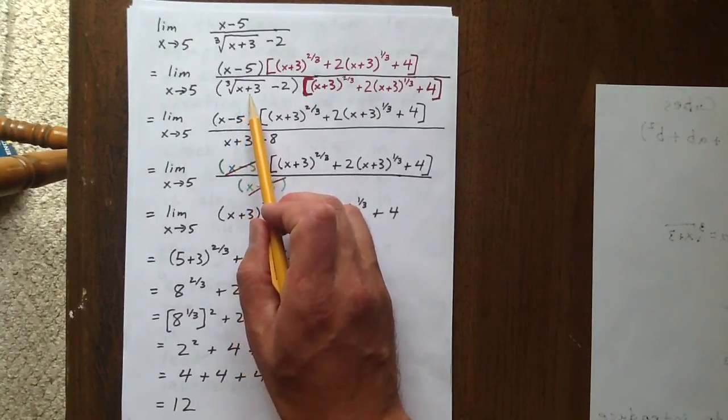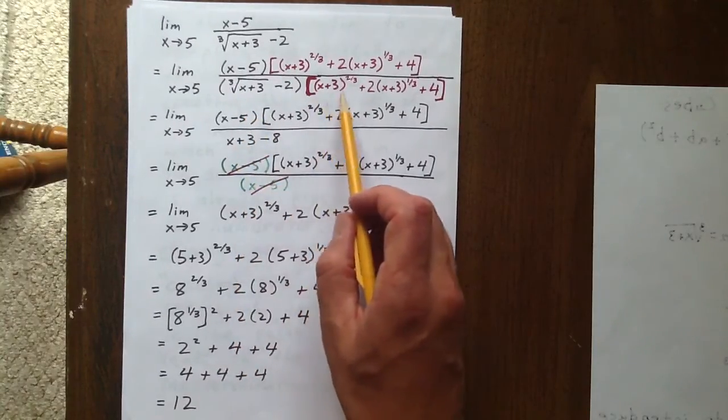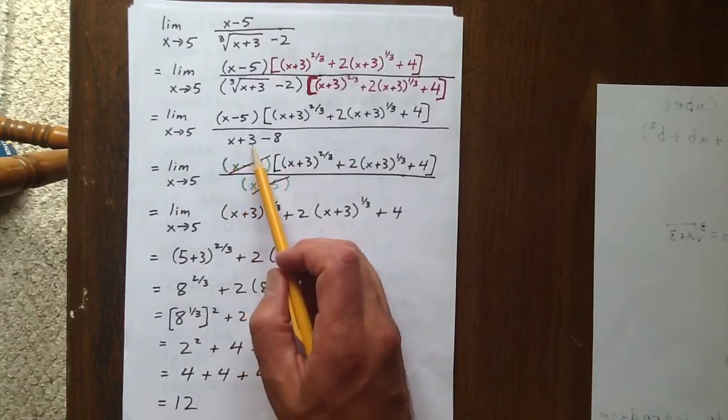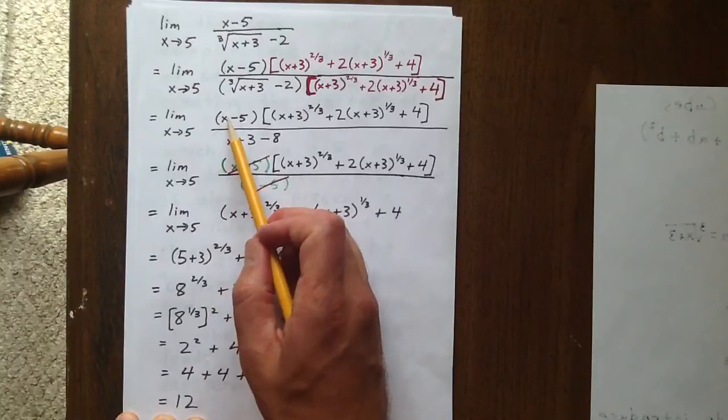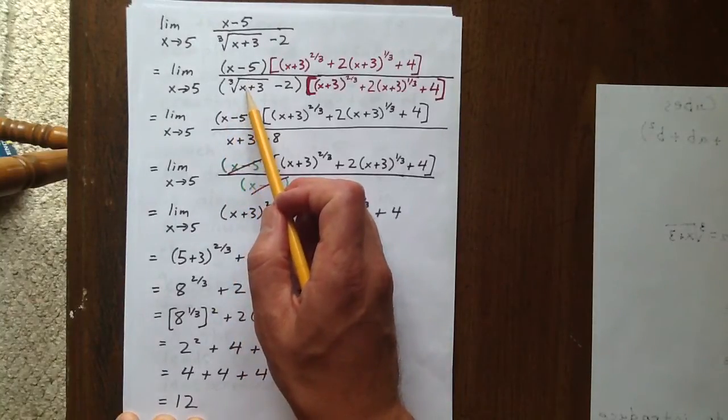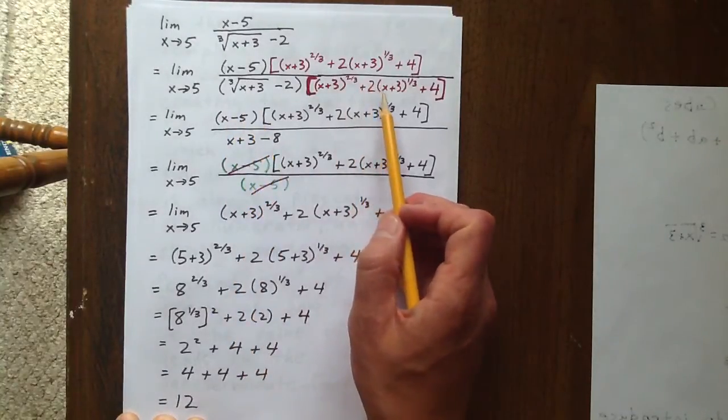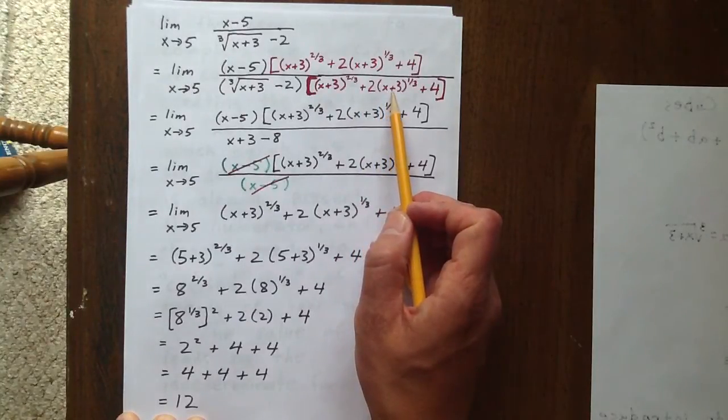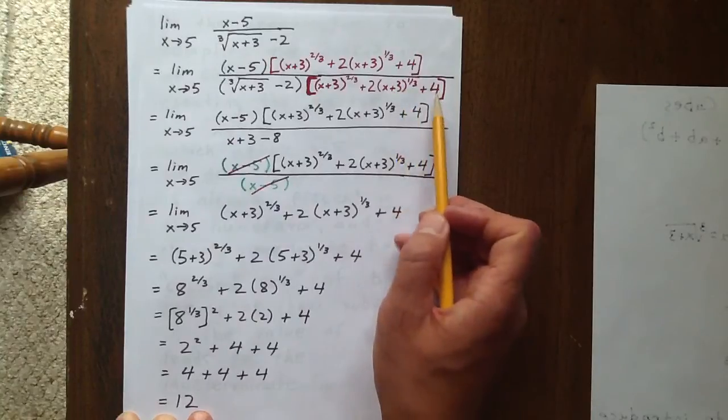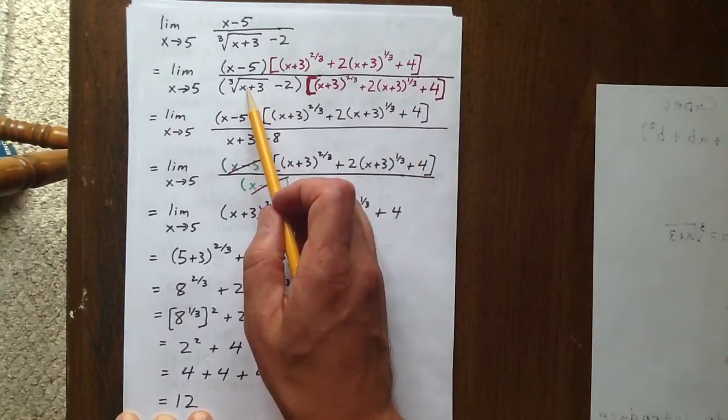Multiplying the cubed root of x plus 3 times x plus 3 to the two-thirds gives x plus 3 to the exponent 1. If we then continue to distribute, we get the cubed root of x plus 3 times 2 plus the cubed root of x plus 3, which is 2 times x plus 3 to the two-thirds, plus 4 times x plus 3 to the one-third.